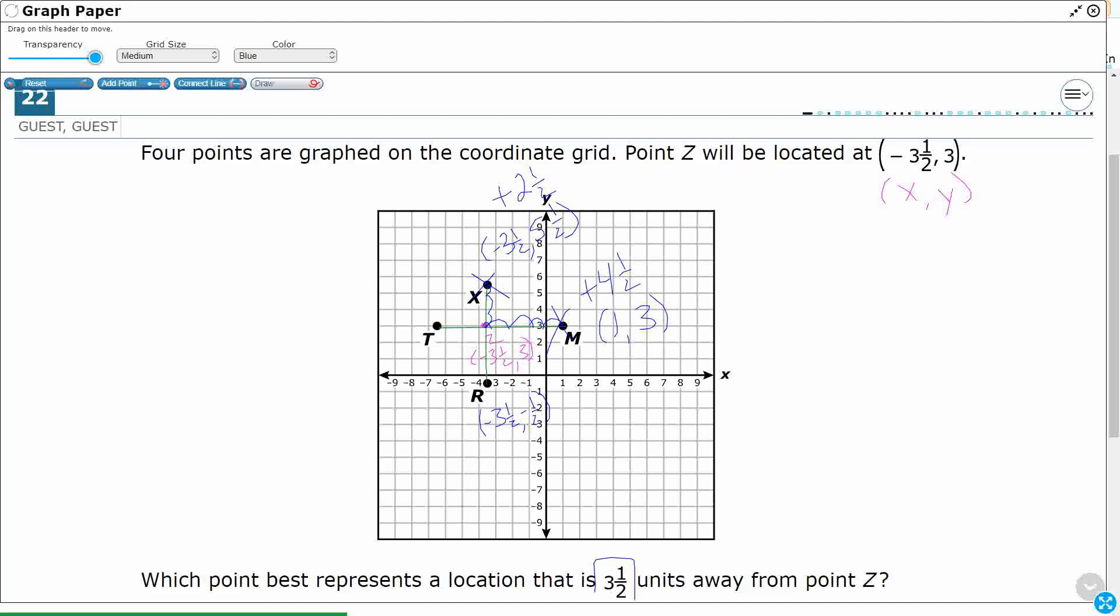Okay, so let's count. Down 1, down 2, down 3, and then another half. So there you go. I went down 3.5 in my y value. So I'm thinking it is going to be R.